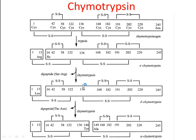First, chymotrypsin: it is synthesized in the pancreas as the zymogen chymotrypsinogen. Chymotrypsinogen is a single polypeptide chain of 245 residues containing five intra-chain disulfide bridges: between amino acids 42 and 58 (first), between amino acids 1 and 122 (second), between 136 and 202 (third), between 168 and 182 (fourth), and between 191 and 220 (fifth). The disulfide bonds are formed by cysteine residues.